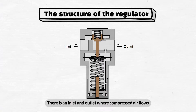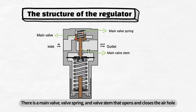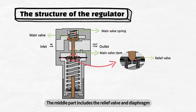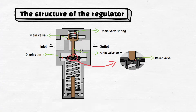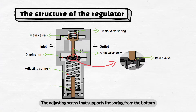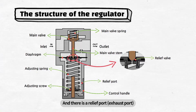There is an inlet and outlet where compressed air flows. There is a main valve, valve spring, and valve stem that opens and closes the air hole. The middle part includes the relief valve and diaphragm. Below, it is a pressure adjustment spring, which we will call the adjusting spring. The adjusting screw that supports the spring from the bottom, the control handle that adjusts the pressure settings, and there is a relief port.